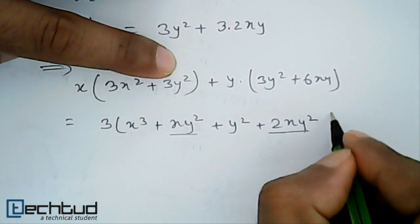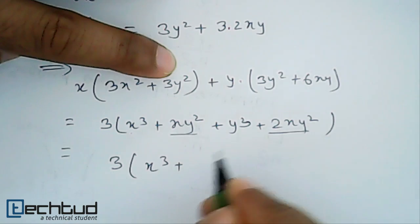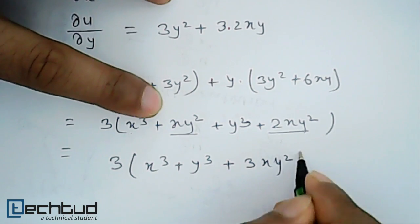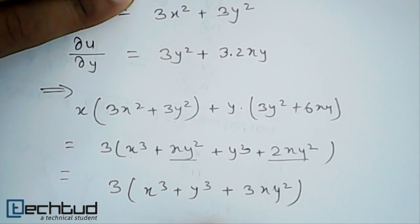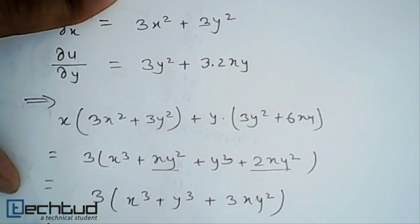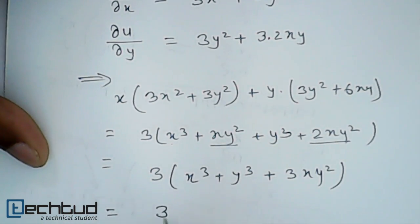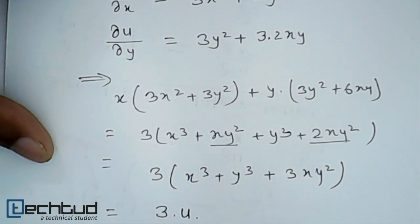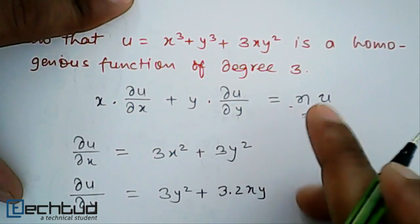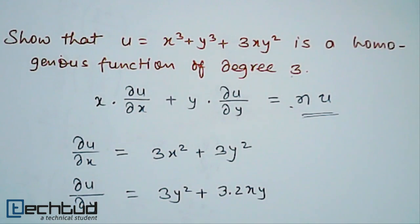Combining 2xy squared and xy squared gives 3xy squared. So the result is 3 times (x cubed plus y cubed plus 3xy squared). This is the same as our original function u. So this equals 3 times u itself — exactly what Euler's theorem states: n times u, where the order n is 3 here. Euler's theorem is verified correctly.